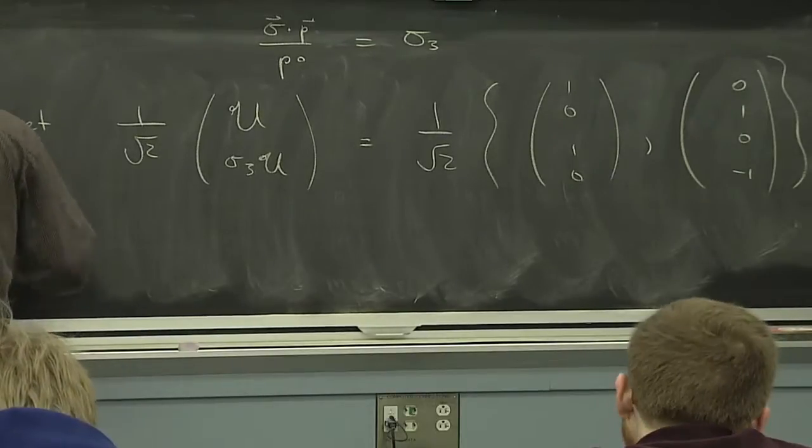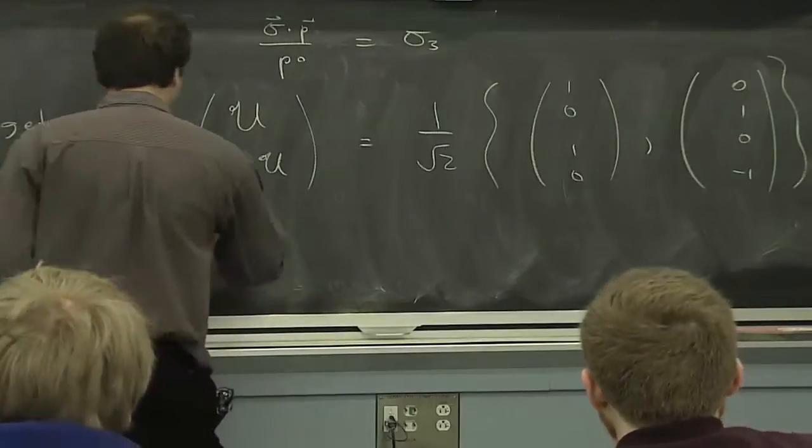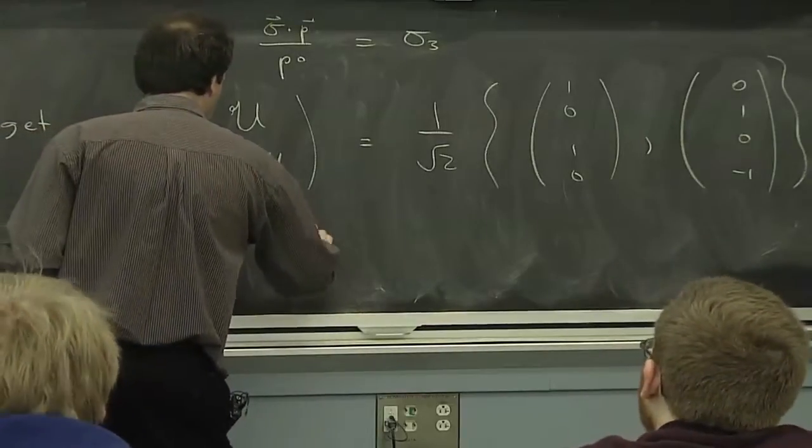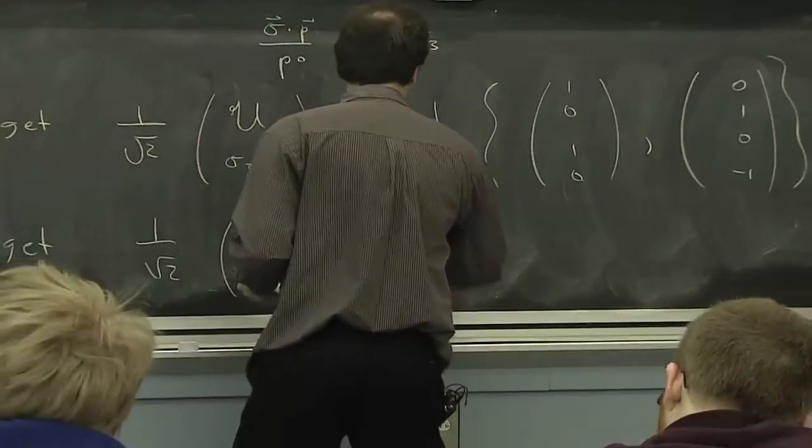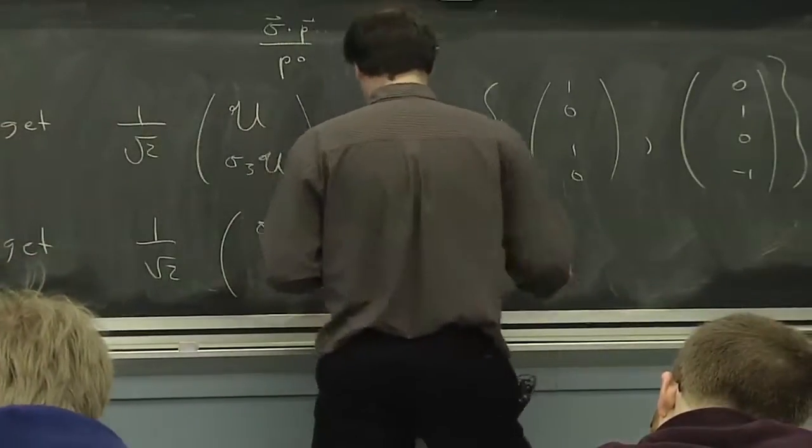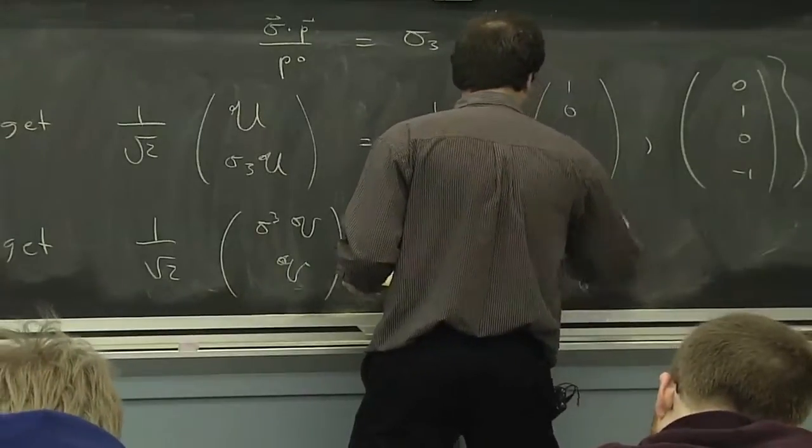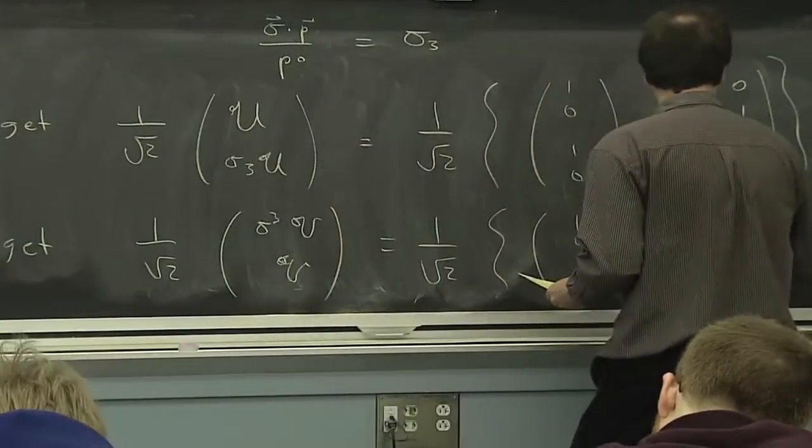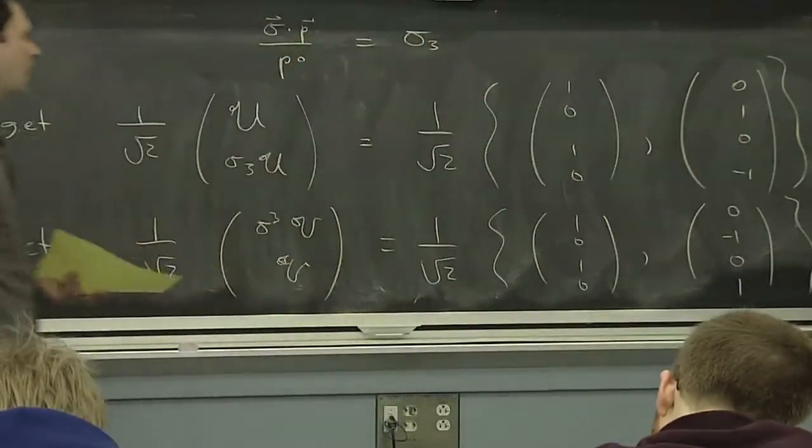And then, likewise, for V of P, we can work out what we got. So this is actually a little different than HQET.